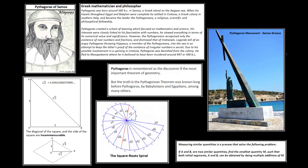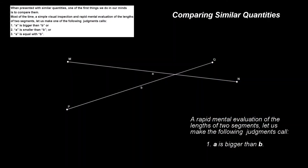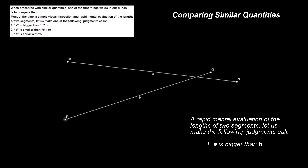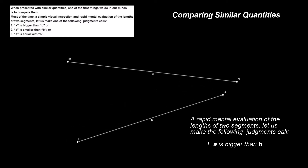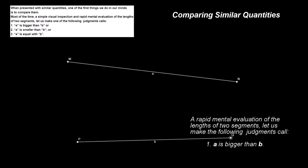Pythagoras is remembered these days as the discoverer of the most important theorem of geometry. But the truth is, the Pythagorean theorem was known long before Pythagoras by Babylonians and Egyptians, among many others. There is another important discovery made by Pythagoreans that is as fundamental as the Pythagorean theorem to mathematics and science: the discovery of the incommensurable quantities.